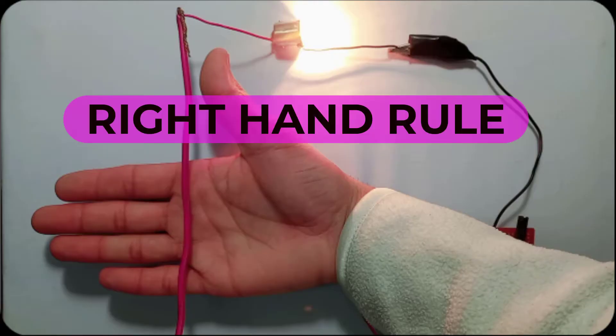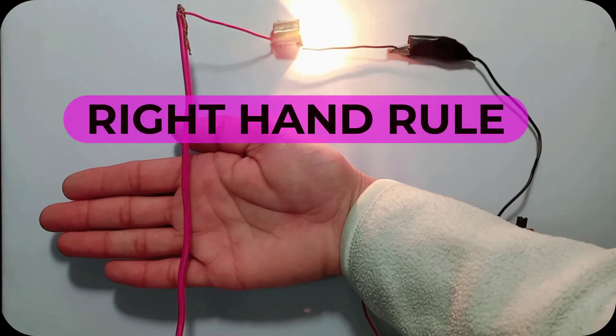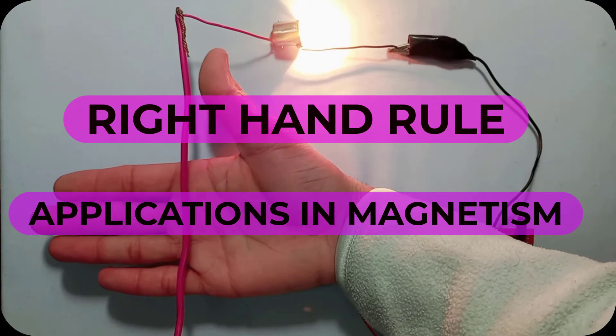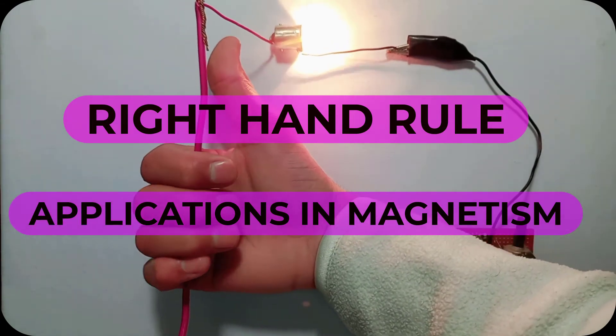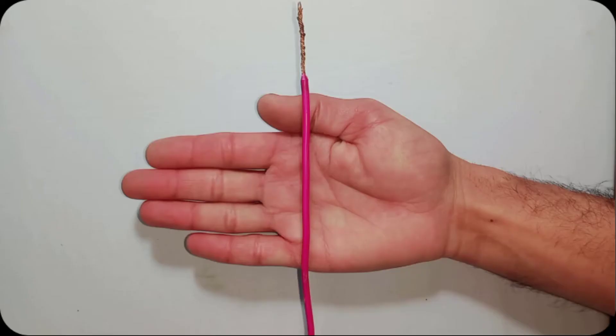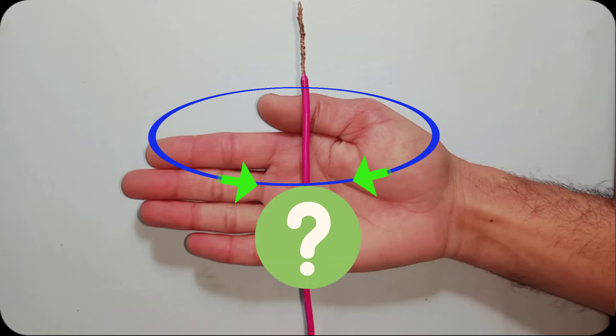Hi guys, in this video we're going to see the right hand rule and its applications in magnetism. Magnetic field lines around a current-carrying conductor may be clockwise or anticlockwise, so we need to find the right direction of the magnetic field.